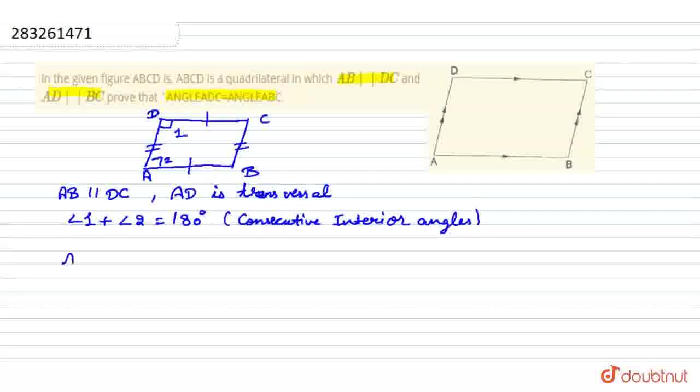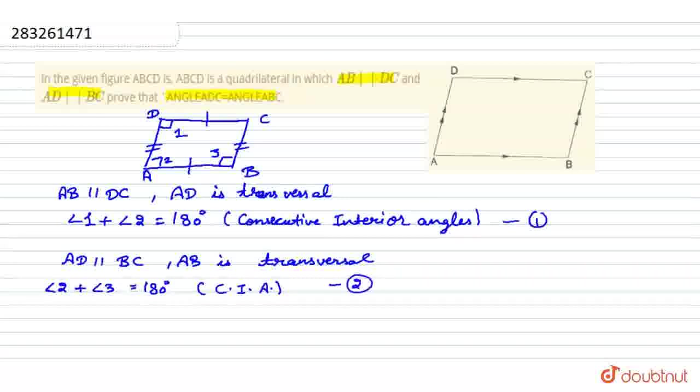Next, we have been given AD parallel to BC. AD parallel to BC means AB is the transversal. Angle 2 and angle 3 are consecutive interior angles, and their sum is equal to 180 degrees. That implies angle 2 plus angle 3 equals 180 degrees.